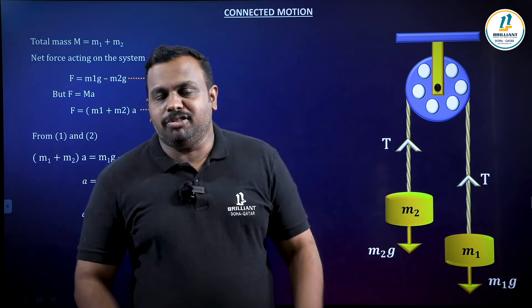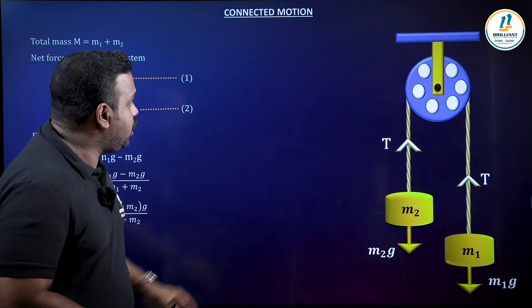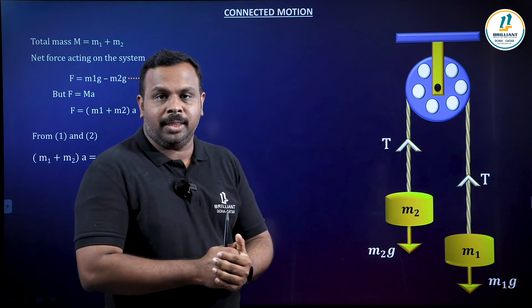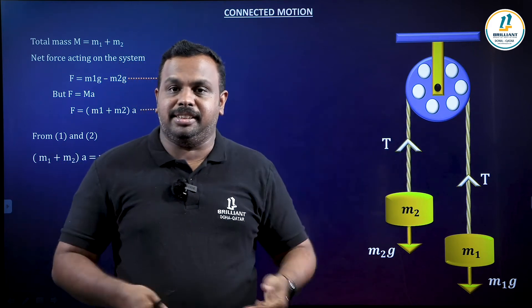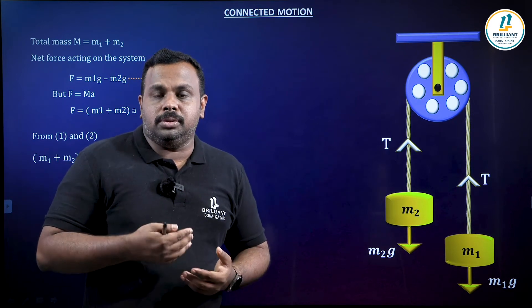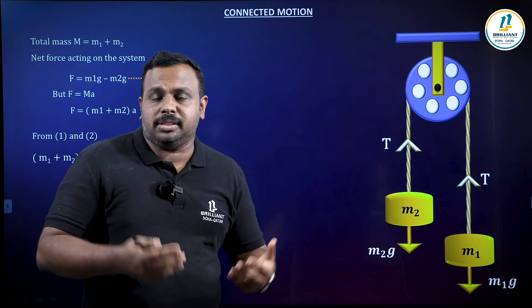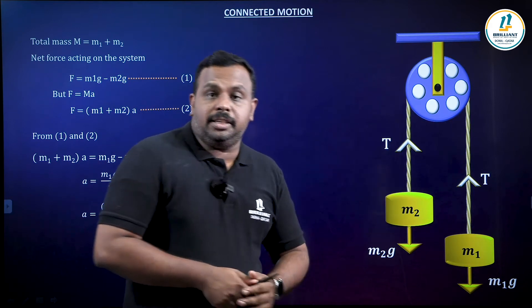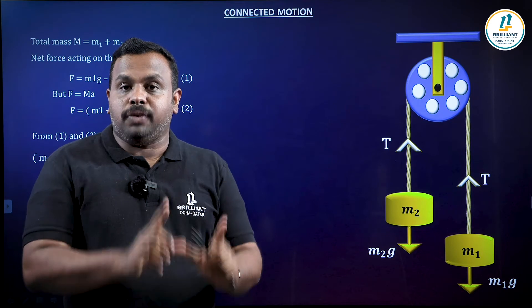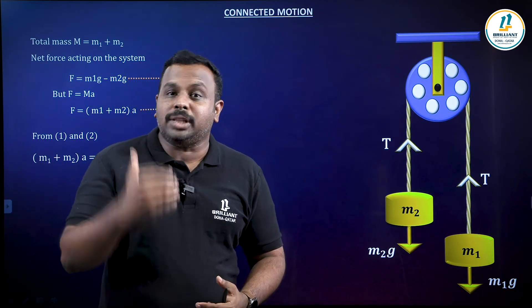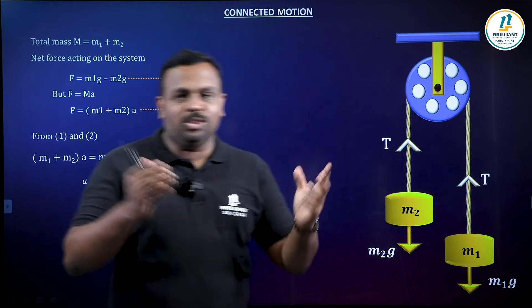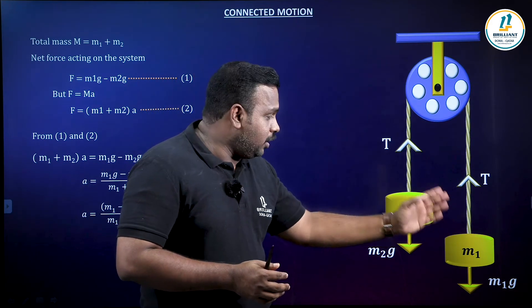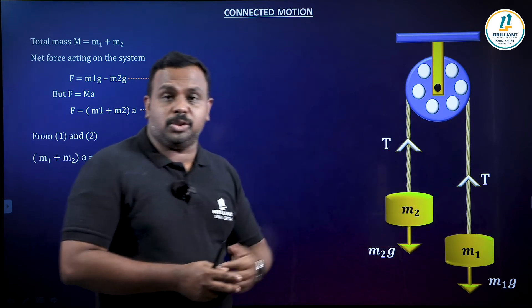This is not our final aim. Our final aim is to find the tension in the string. If we consider the system as a whole, tension is an internal force, and Newton's laws apply to external forces only. So we cannot find tension by considering the whole system. To make tension an external force, we take a part of the system — this concept is called the free body diagram. We can take the motion of M1 or M2 to find the tension.